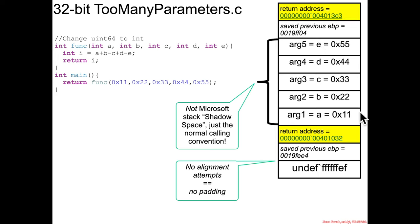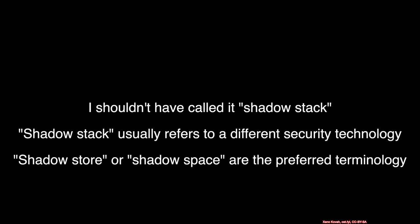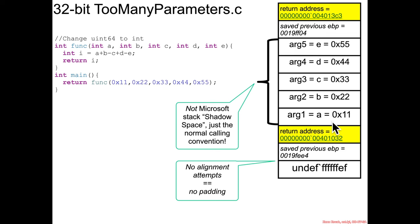This looks very much like the shadow stack diagram that we saw before in 64-bit, going one, two, three, four, five upwards. But this is not the shadow stack — this is just how the calling convention works out in 32-bit systems.